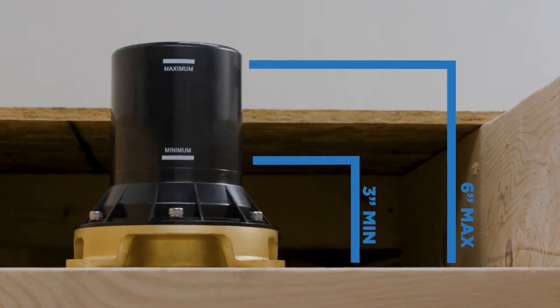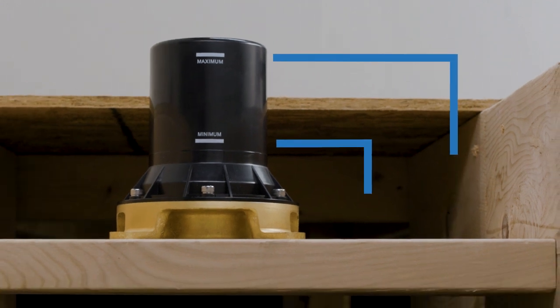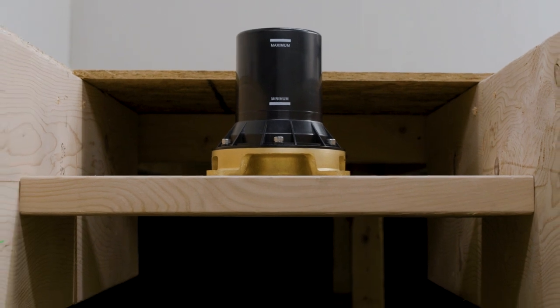This Rough-In valve accommodates an installation depth between 3 inches and 6 inches below where the finished floor line will be. Use a level to ensure the stringer board is even. This will help make sure the faucet will stand straight when it's installed.